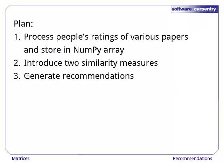We will divide the code into three pieces. First, we will take a list of previous ratings and store them in a NumPy array. Next, we will introduce two measures of the similarity between two papers or between two people's ratings. Last, we will use those measures to generate recommendations for a user.